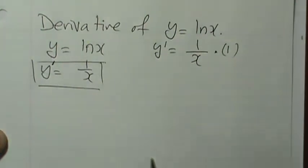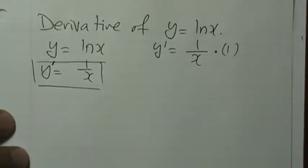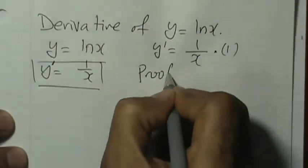And you're probably wondering, okay, so why is the derivative of natural log y equals ln x equal to 1 over x? So let's prove this theory here.